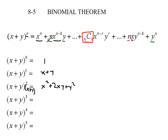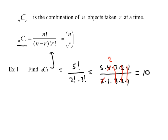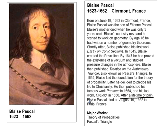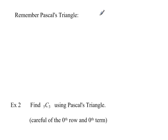Going back to the binomial theorem, all of these coefficients are always combinations. So if we know how to calculate combinations, we can figure out all the coefficients. That's one way, but it seems like a lot of work. A very intelligent man hundreds of years ago figured out an easier way. His name was Blaise Pascal, who lived in the 1600s and greatly furthered mathematics, especially in the field of probability. He came up with what's called Pascal's triangle.